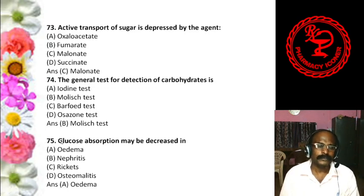Question 47: Which of the following is a heteroglycan? Dextrin, Agar, Inulin, or Chitin. The answer is B, agar. Question 48: Keratan sulfate is found in abundance in — Heart muscle, Liver, Adrenal cortex, or Cornea. The answer is cornea — cornea contains keratan sulfate.